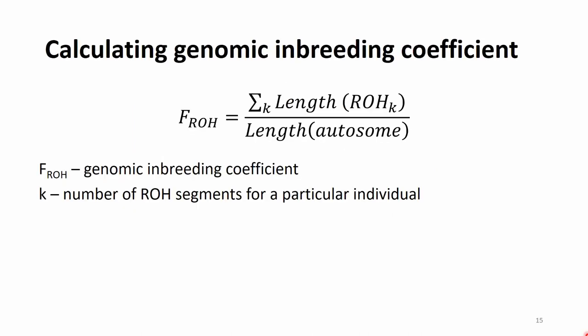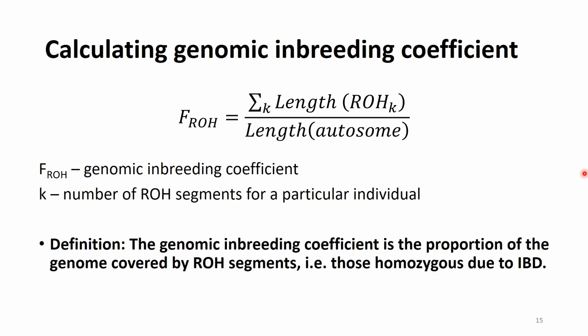The calculation of the genomic inbreeding coefficient is straightforward. F_ROH is the genomic inbreeding coefficient based on ROH segments. We identify all ROH segments in an individual, sum their lengths, and divide by the total length of the autosomal genome covered by SNPs. In other words, the genomic inbreeding coefficient F_ROH is the proportion of the genome covered by ROH segments — those that are homozygous due to identity by descent.